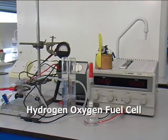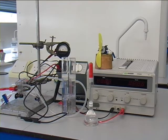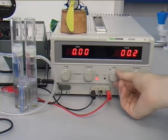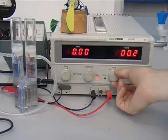In the hydrogen-oxygen fuel cell, an electrolyzer is used to generate the hydrogen and oxygen needed to power the cell. The electrolyzer is driven by a power supply.